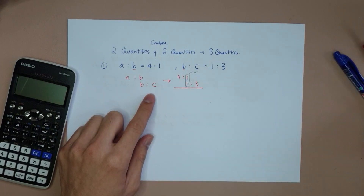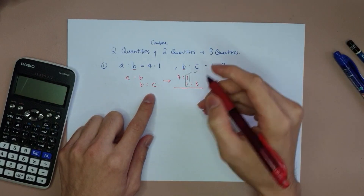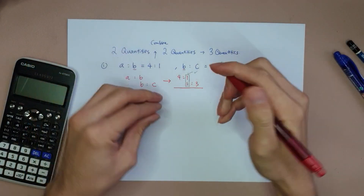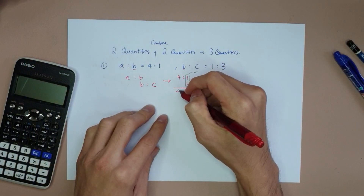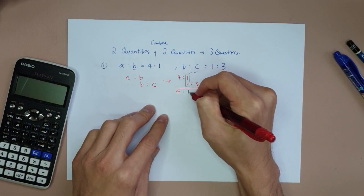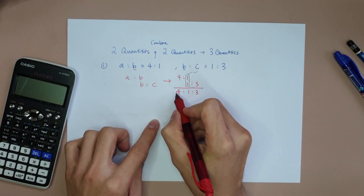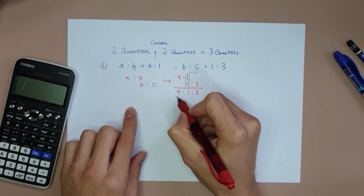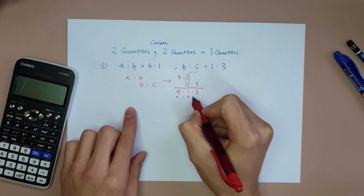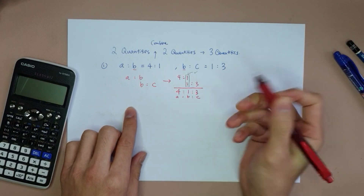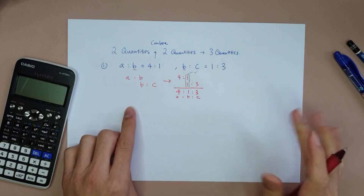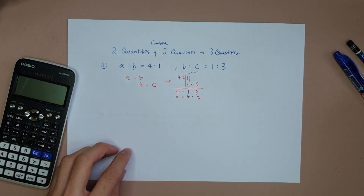Since the middle numbers are already the same, you can straight away squeeze it and make it 4 : 1 : 3. This A is 4, this B is 1, and this C is 3. Something very simple.